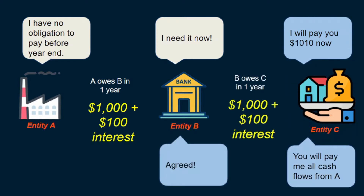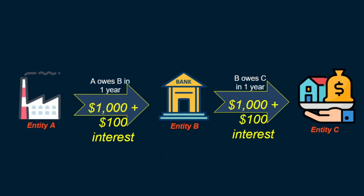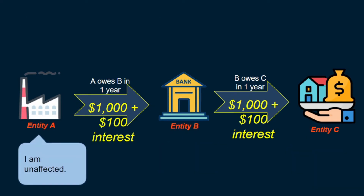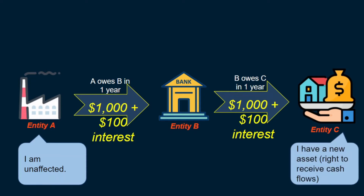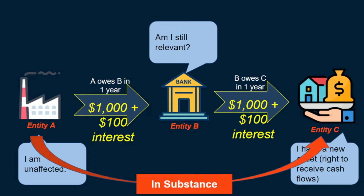So in essence, entity B is simply receiving cash flows from entity A on behalf of entity C. Nothing has changed in the financial liability of entity A, and entity C now has a new financial asset. But what about entity B? Should entity B de-recognize the financial asset because its right to receive contractual cash flows from A has been given up in substance in favor of entity C on receipt of a consideration, or should it keep the financial asset in its own books and book a financial liability in entity C's favor?